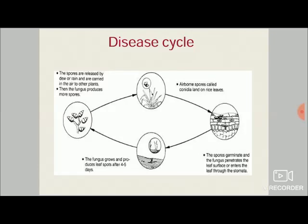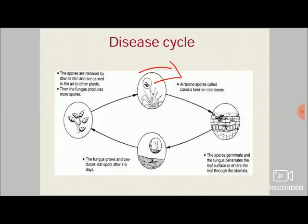Coming to the disease cycle: airborne spores called conidia land on the rice leaves. These airborne spores come from the weed or collateral host. Another source of infection is the seed, as the pathogen can also thrive in seeds. Next, the spores germinate and the fungus penetrates the leaf surface or enters through the stomata. After reaching the leaf surface, it germinates and produces intracellular and intercellular haustoria — modified hyphae of the pathogen — which enter into the intracellular spaces. These are the main structures that help the pathogen to perpetuate inside the plant.